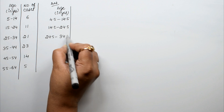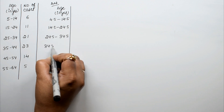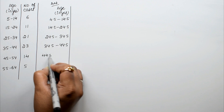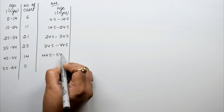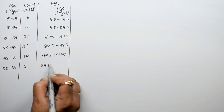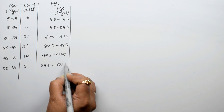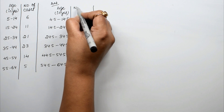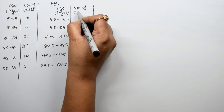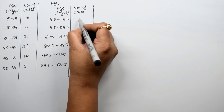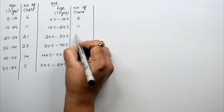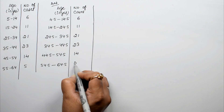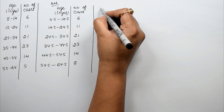The adjusted class intervals become: 4.5–14.5, 14.5–24.5, 24.5–34.5, 34.5–44.5, 44.5–54.5, and 54.5–64.5. The corresponding number of cases (frequency f) are: 6, 11, 21, 23, 14, and 5.